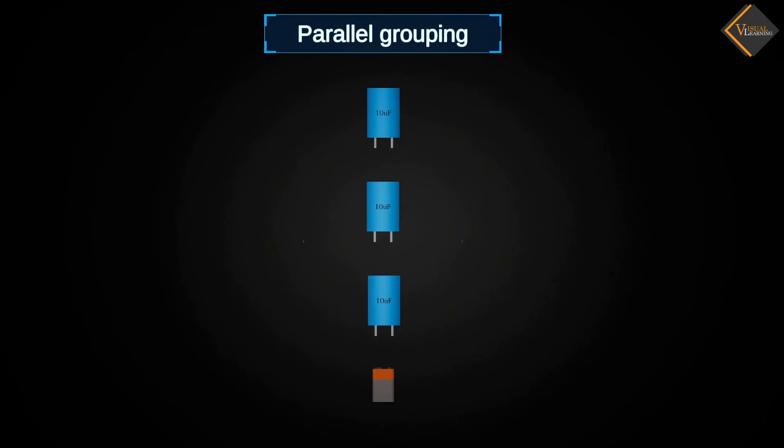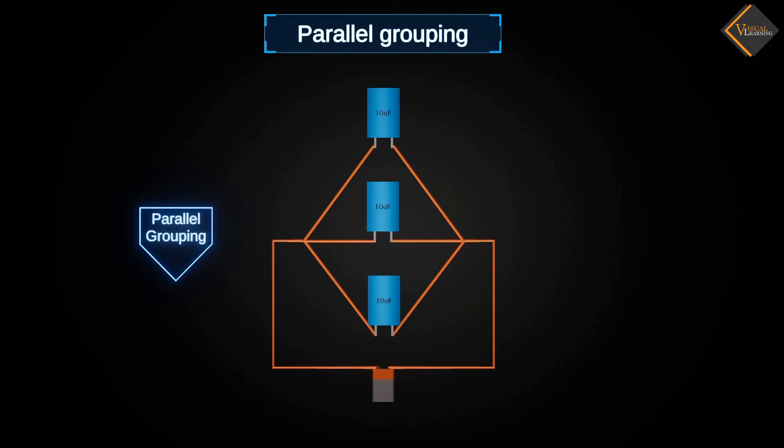Parallel grouping. When all the left terminals of capacitors are connected to one terminal of the battery, and all the right terminals to the other terminal of the battery, it's called parallel connection or parallel grouping.